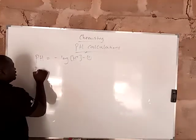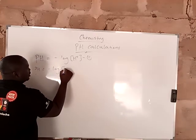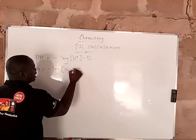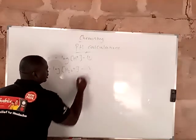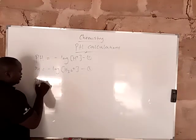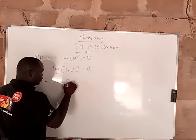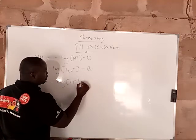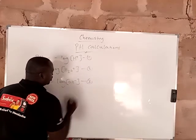We also know that pH can also be minus log of hydronium ion concentration. This is equation 2. We also know that pH equals minus log of hydroxyl ion concentration. This is equation 3.